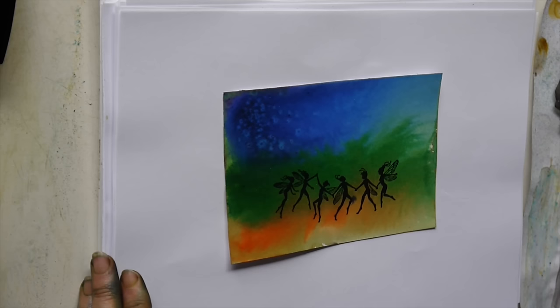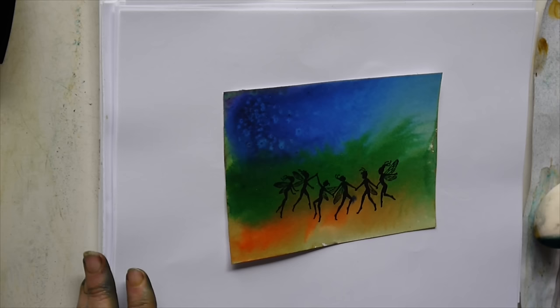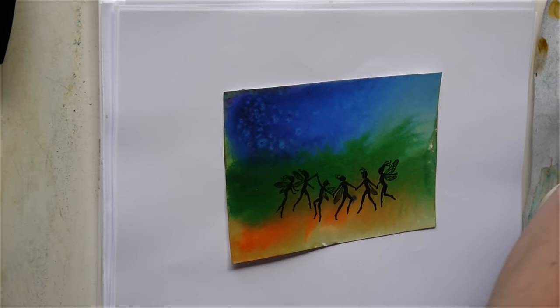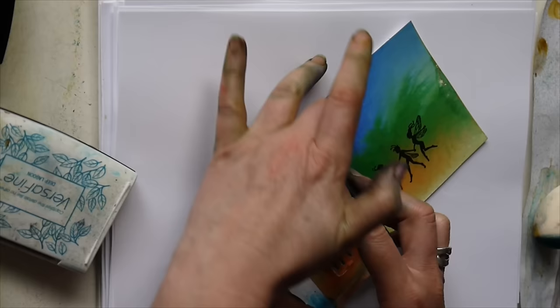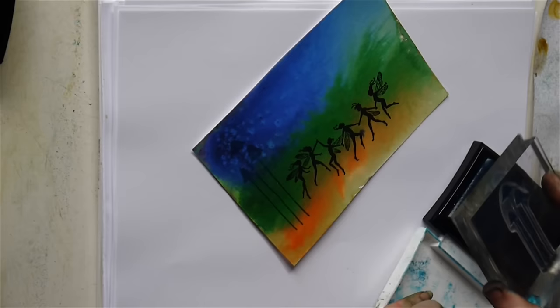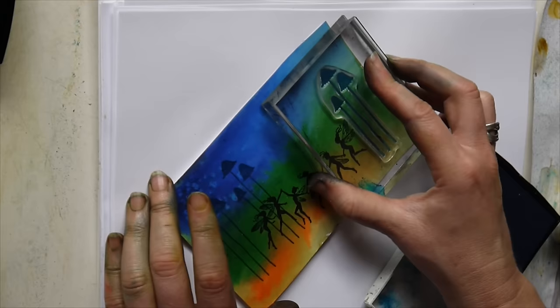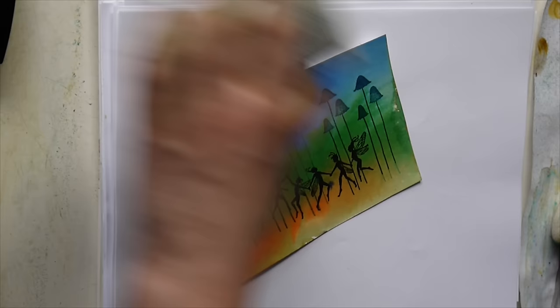So we're going to think about what we want to put in the background there. I think probably some mushrooms would be quite nice. So, just grab some mushrooms. And this time I'm going to ink up in the Deep Lagoon VersaFine again. And we're just going to dot a few of those around, like so.